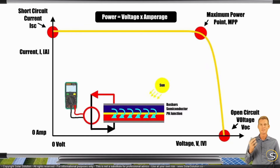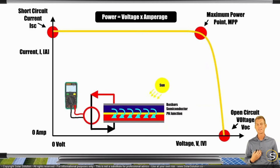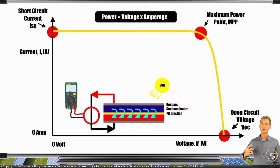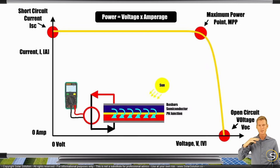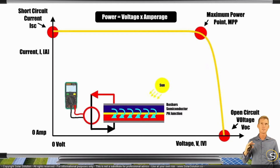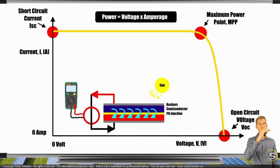If less sun power hits the panel — if you have a lower irradiance value — you get less electricity out of the panel. Interestingly, the open circuit voltage doesn't fluctuate as much as the amperage when irradiance changes. If irradiance reduces, the current coming from the panel reduces quite a bit, but the voltage stays almost the same. The voltage reduces a little bit, but the current reduces almost proportionally to the decrease in irradiance.